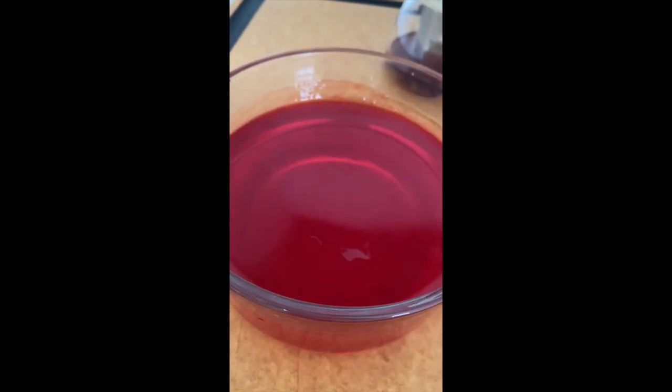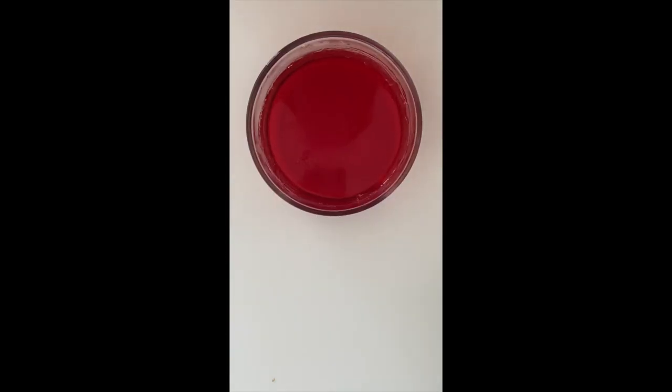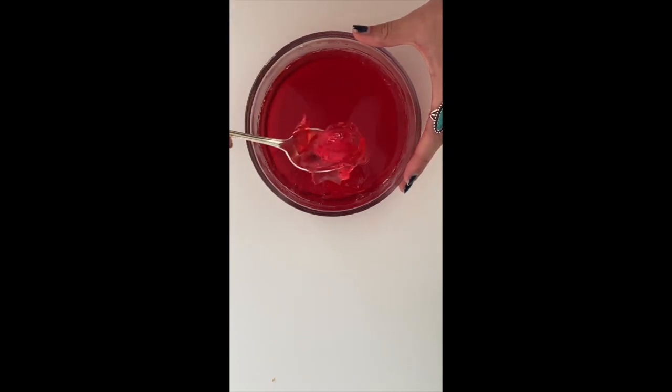Jell-O cannot be defined as either a solid or a liquid. It is a colloid. Colloids are mixtures where one or more substances are dispersed as relatively large solid particles or liquid droplets throughout the substance. The particles of a colloid remain dispersed.